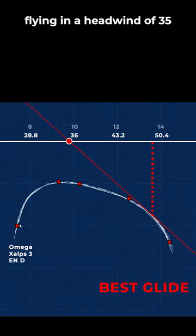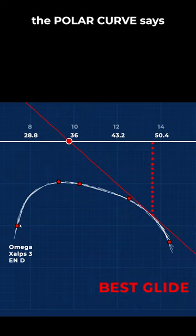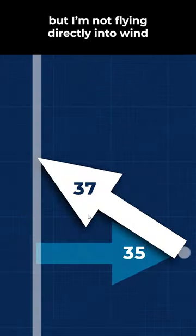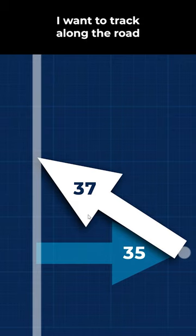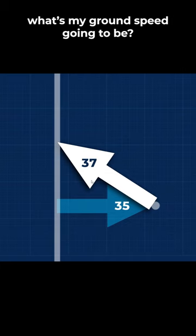Flying in a headwind 35, the polar curve would suggest my best glide is going to be at about three quarters bar. But I'm not going directly into wind. I want to track along the road. What's my speed going to be along the road?